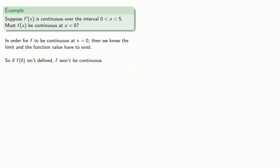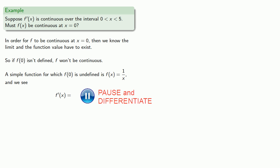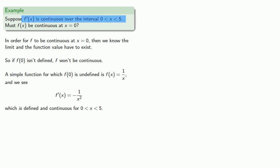Well, a simple function for which f of 0 is undefined is f of x equals 1 divided by x. And we see that the derivative is... And this is defined and continuous over the interval between 0 and 5, as long as we exclude x equals 0. So it's possible for a function to be differentiable over an interval, but not continuous at the endpoints.